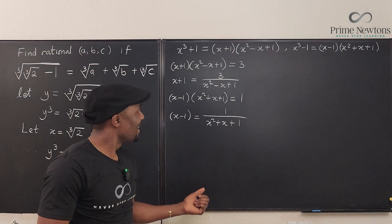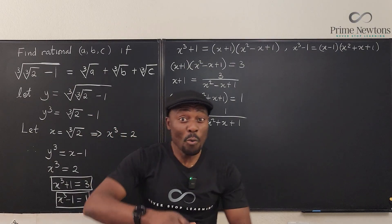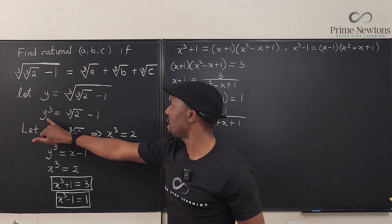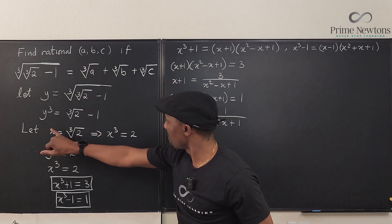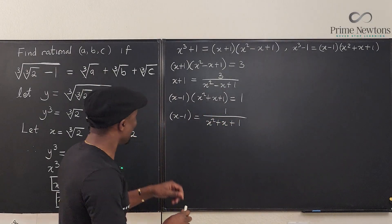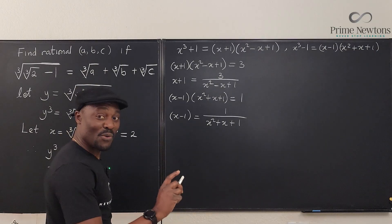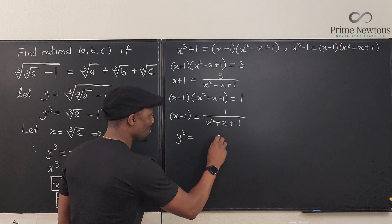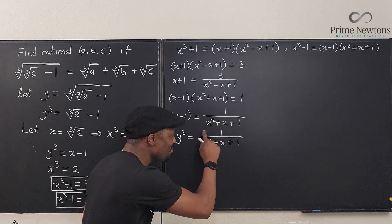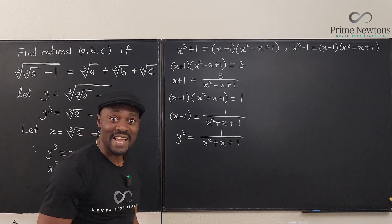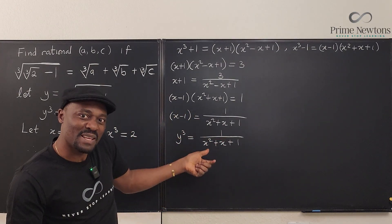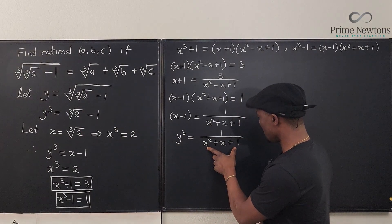This leads me to the key point. Going back to the beginning: y³ = x − 1, and we've just shown x − 1 = 1 / (x² + x + 1). So y³ = 1 / (x² + x + 1). If I can rewrite this in a nice way, I just take the cube root of both sides to get y. I'm beginning to see the three terms I need — maybe if I can flip this. But this doesn't look promising yet.